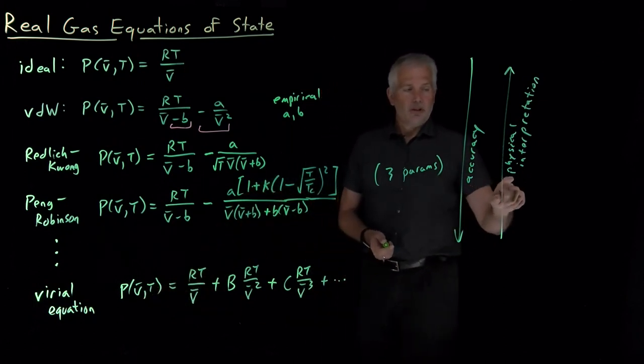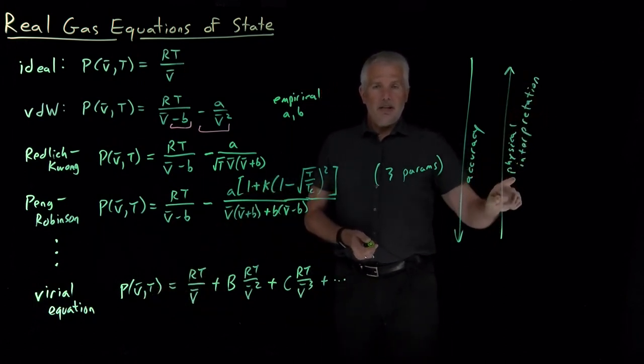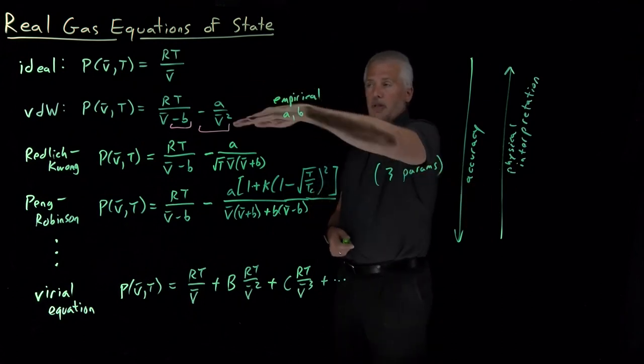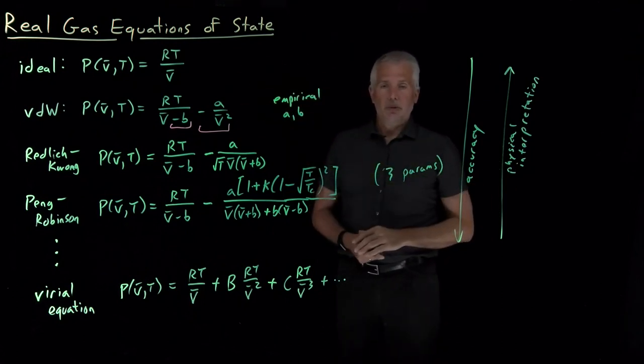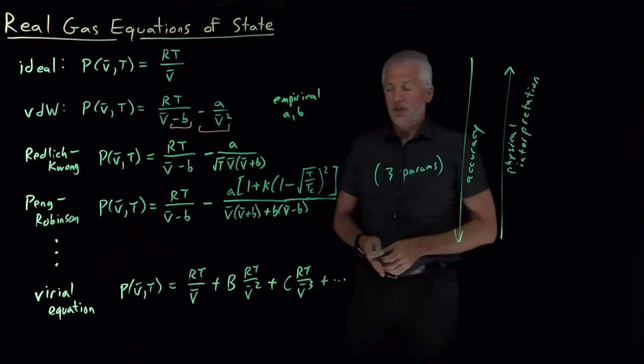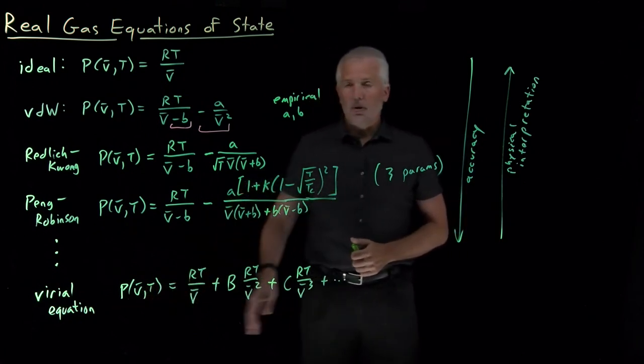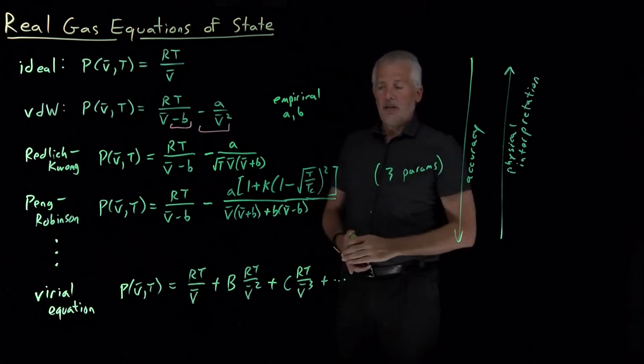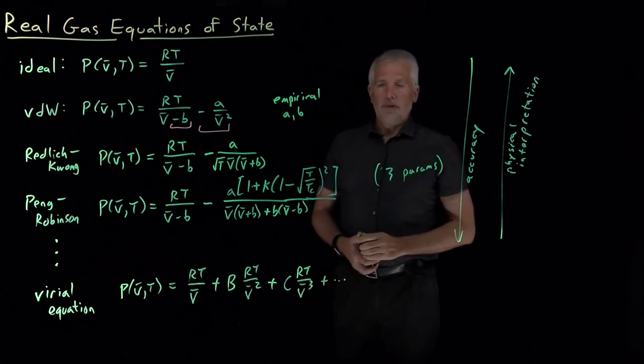So if your goal is being able to understand what the model says about the physical properties of the molecule other than pressure, then you might be more interested in Van der Waals or the ideal gas equation of state. But if you want to get three or four or five sig figs worth of precision out of your prediction for the pressure, then you might be more interested in a model down at this end of the scale like the Peng-Robinson model or the Virial equation of state.